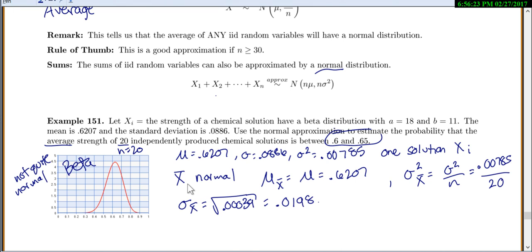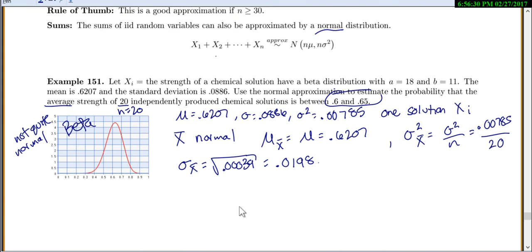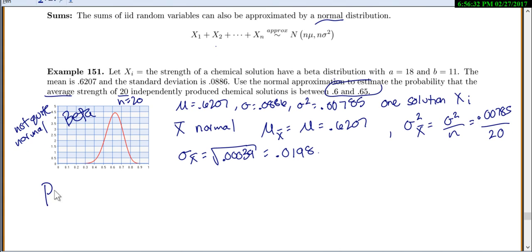We found, we know that x-bar will be normal, which means we can use our normal table. We found the mean and the standard deviation for x-bar. Now let's find our probabilities. Technically, this isn't anything new that we didn't do in section 5.2. We learned the cool central limit theorem, but we're doing the exact same things. We're looking for the probability the average is between 0.6 and 0.65. So x-bar is between 0.6 and 0.65.